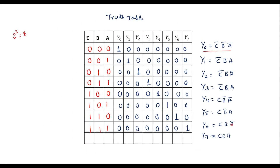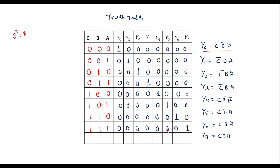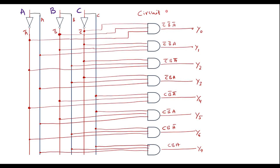For Y6 = C·B·Ā: connect C line, B line, and A̅ line. For Y7 = C·B·A: connect C, B, and A directly. This is the complete circuit diagram of the 3-to-8 decoder.